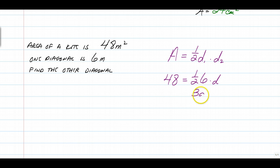So half of 6 is 3. D is equal to 48. Divide both sides by 3 and you end up with the other diagonal is 16 meters. So that's it for working with kites and rhombi. This is Longo and I'm out. See you bye.